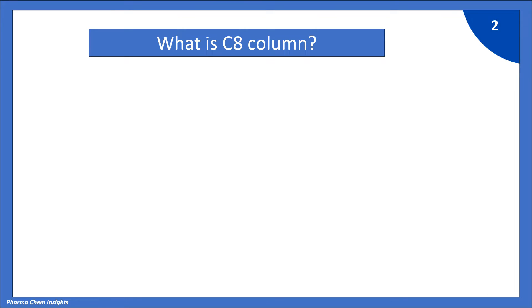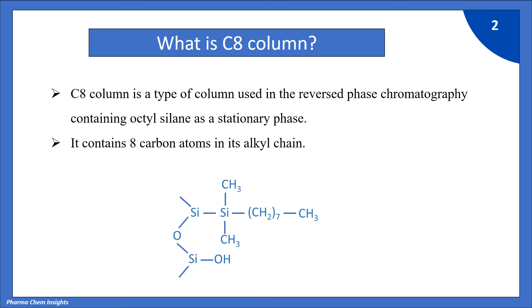What is C8 column? C8 is a type of column used in reverse phase chromatography containing octyl silane as a stationary phase. It contains 8 carbon atoms in its alkyl chain.